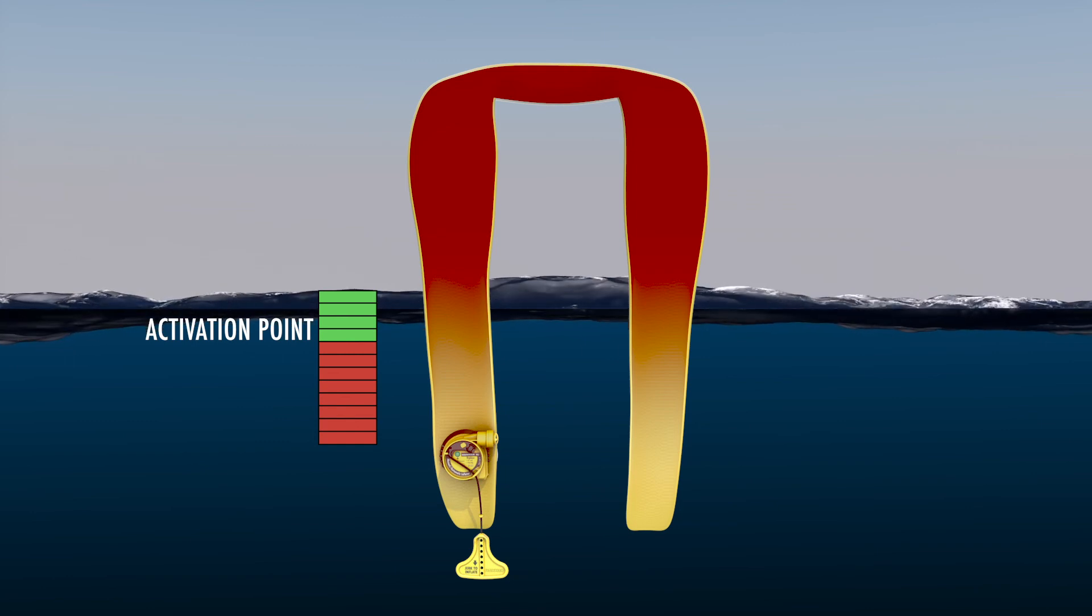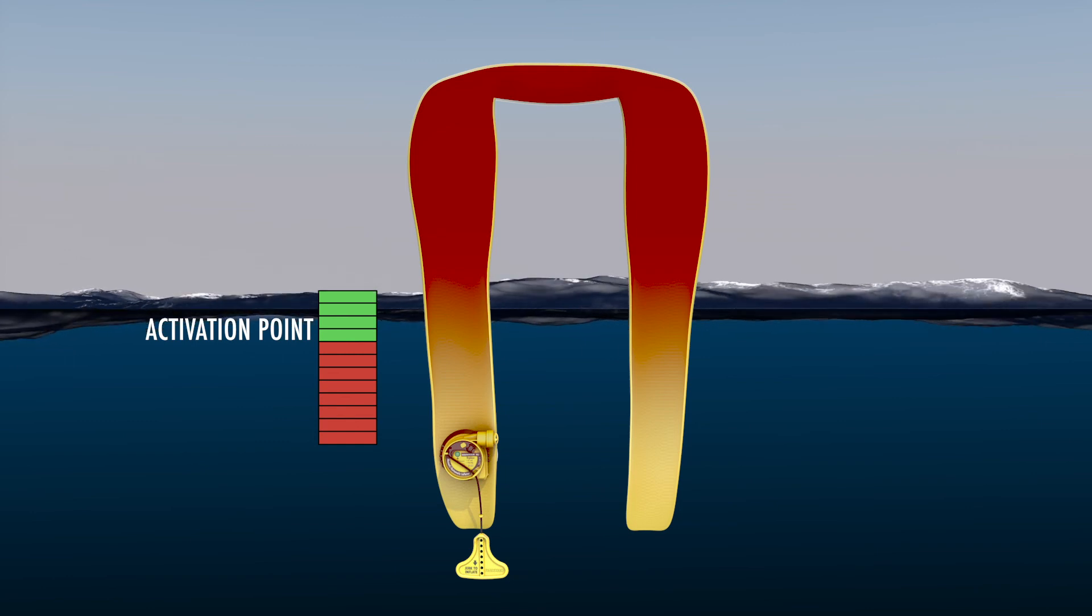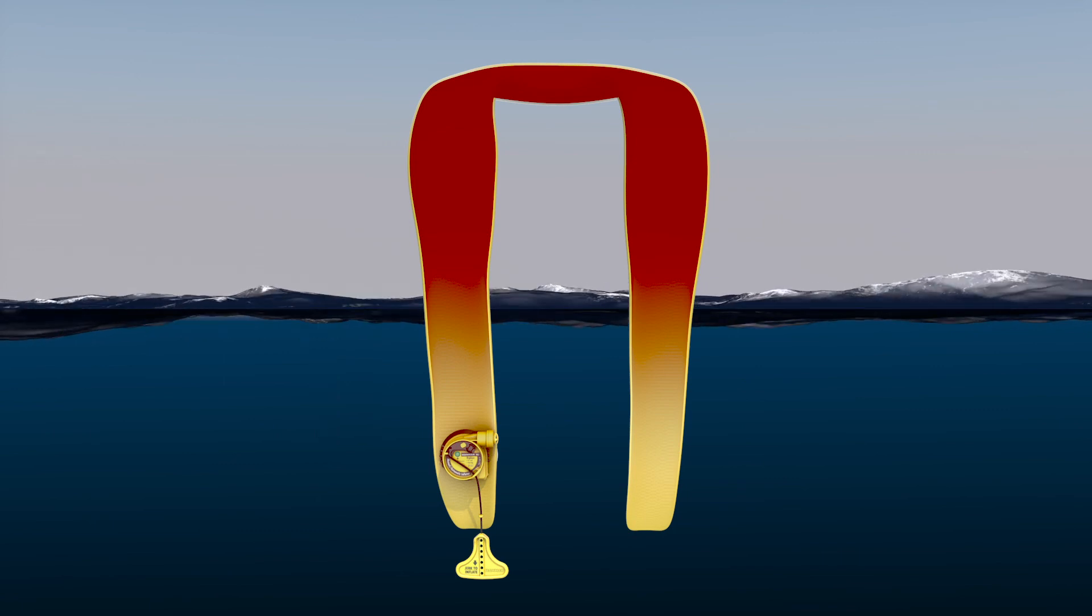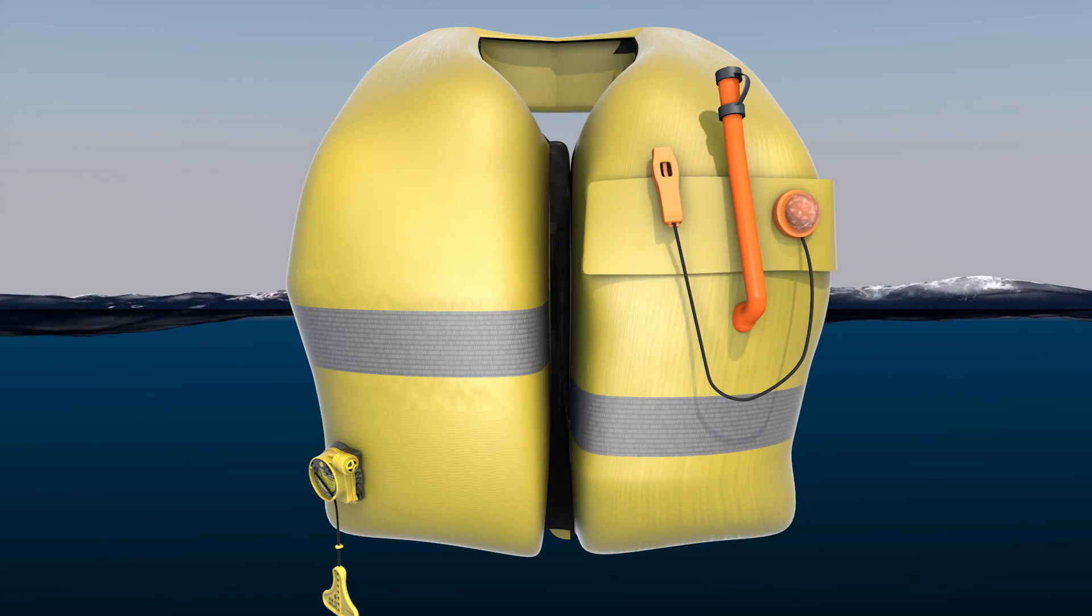When the vertical distance between the lowest point of the displaced air and the hydrostatic valve is about 10 cm, the air pressure in the valve is low enough to allow water to enter and activate inflation.